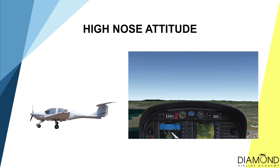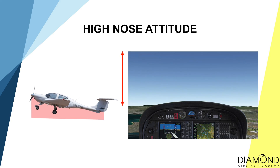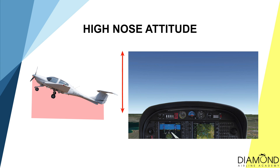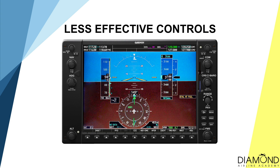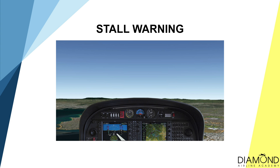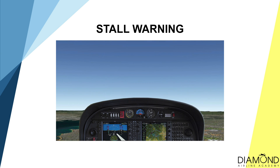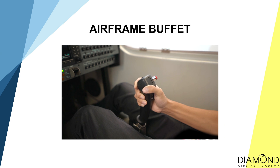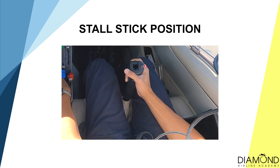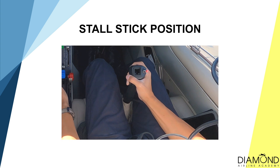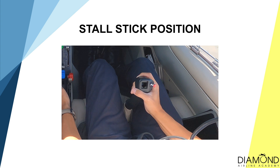Before we dive into the advanced stalls, let's have a quick revision on the six symptoms of a normal stall. Firstly, as the aircraft is approaching a stall, the nose attitude will gradually rise. Secondly, airspeed will decrease. As the airspeed drops, the responsiveness of control will decrease as well. Stall warning will go off to warn the pilot that a stall is imminent. The control will be buffeting as more and more turbulence is created by the wing. Lastly, the control position will be quite aft — and those are the six symptoms of the stall.